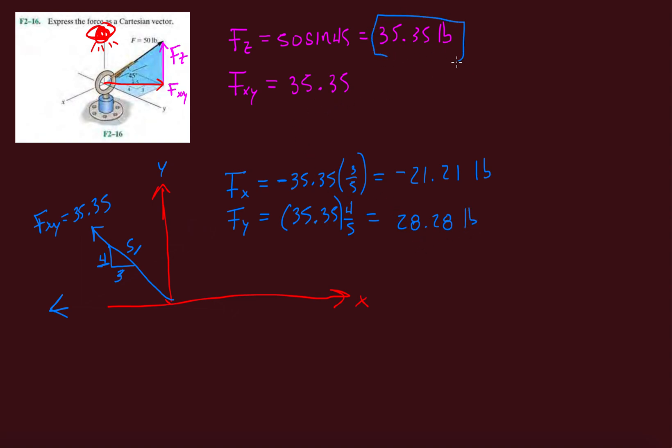And then that's it. We already found our fz, our fy component, and our fx component. So now, just to finish it off, our vector will be minus 21.21 i plus 28.28 j plus 35.35 k. And that's it. Now we've expressed this force in terms of Cartesian vector.